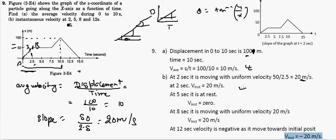For t = 5 seconds, the graph shows a straight horizontal line, meaning the displacement is constant at 50 meters. Since there is no change in displacement, the slope is zero — 50 minus 50 over any time change equals zero. So the instantaneous velocity at t = 5 seconds is 0 m/s.